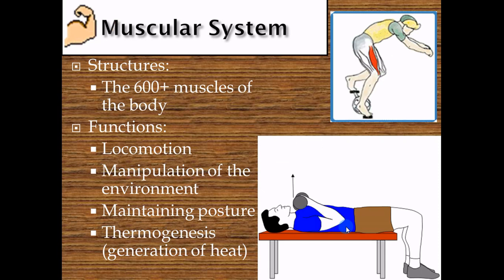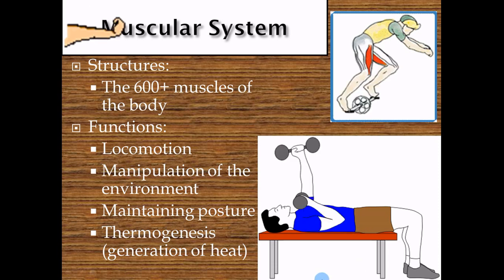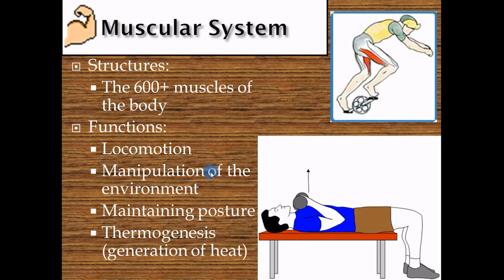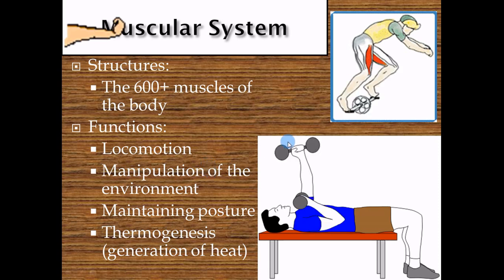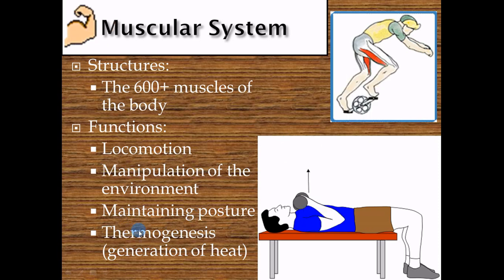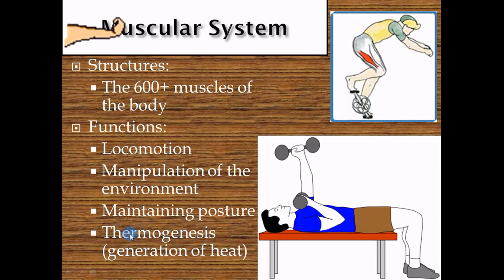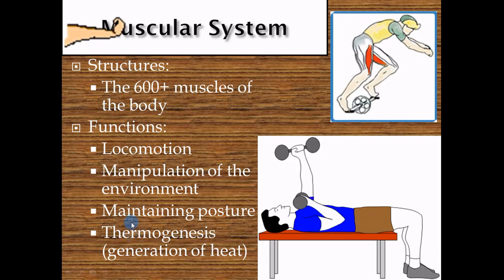Continuing through the systems: the lungs are the respiratory system; the stomach, liver, pancreas, and mouth form the alimentary canal or digestive tract; kidneys and bladder make up the urinary system; and the uterus, ovaries, testes, and penis are the reproductive structures. We'll go through each one. The muscular system has over 600 muscles. Its main functions include locomotion, manipulating the environment, maintaining posture, and thermogenesis — when you're cold, you shiver and create heat.